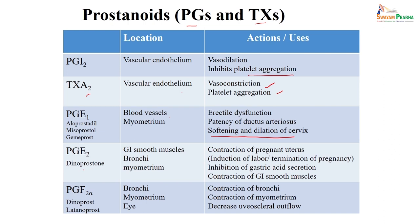Another prostaglandin E2 drug is dinoprostone. Prostaglandin E2 is present in GI smooth muscles, tracheobronchial tree, and myometrium. Its action is contraction of the pregnant uterus; it is also used in labor induction, termination of pregnancy, and GIT conditions because it causes contraction of GI smooth muscles. Another example is prostaglandin F2 alpha — dinoprost and latanoprost — mostly localized in the bronchi, tracheobronchial tree, or myometrium, and also used in ophthalmological conditions.